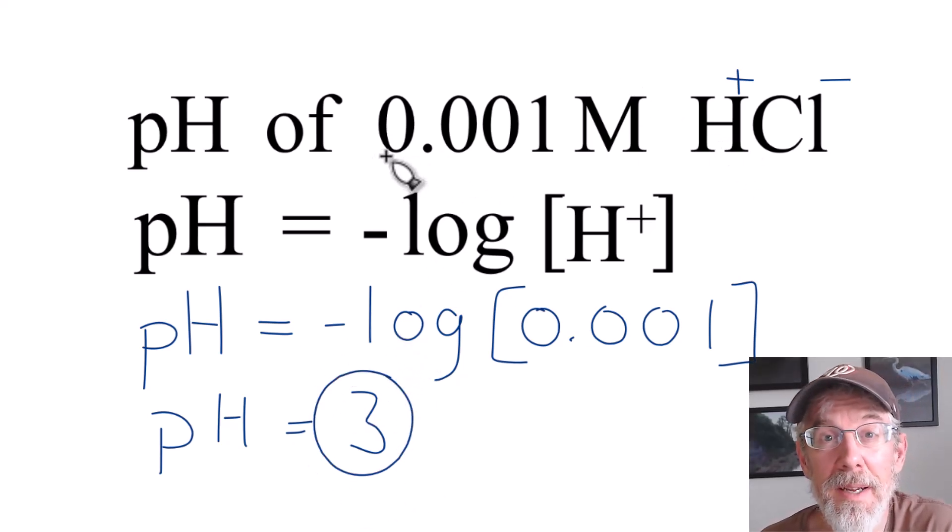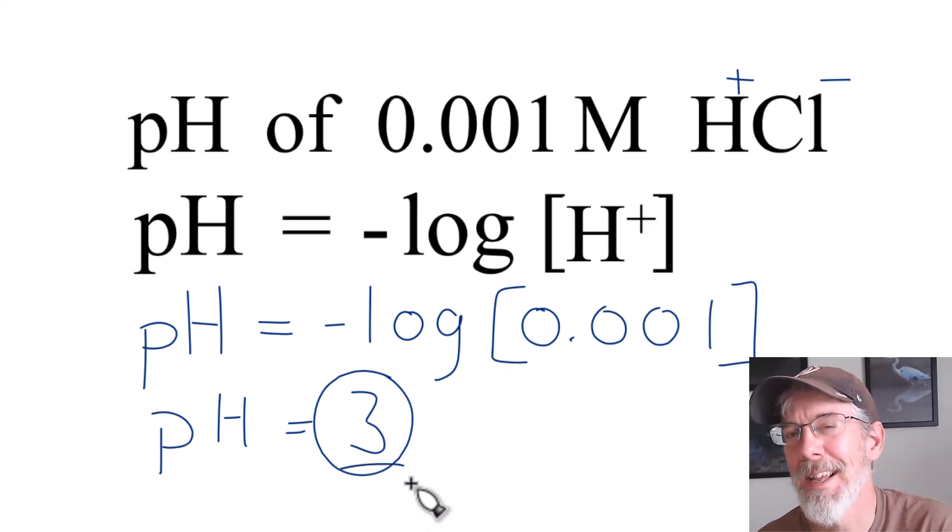That's it. This is Dr. B finding the pH of a 0.001 molar solution of hydrochloric acid. The answer is 3. Thanks for watching.